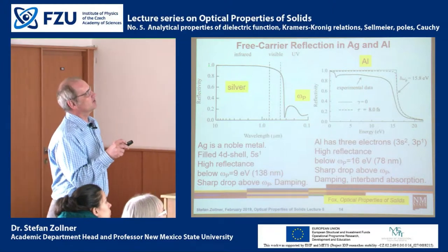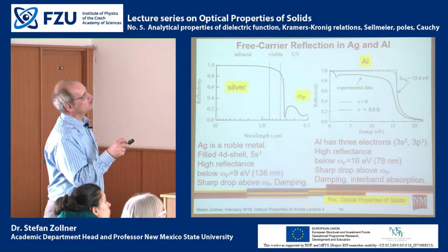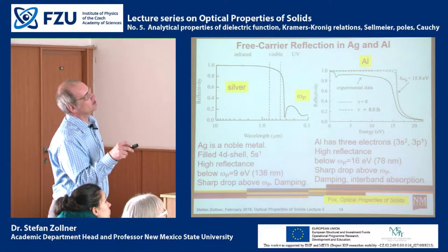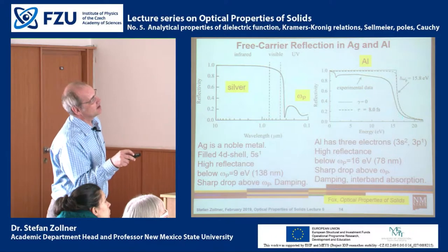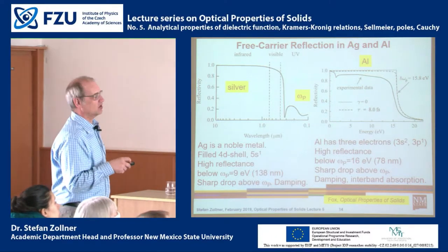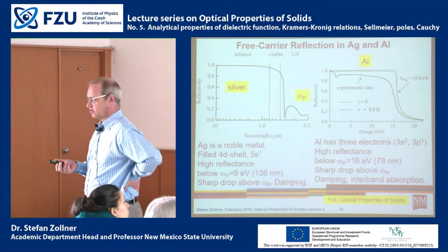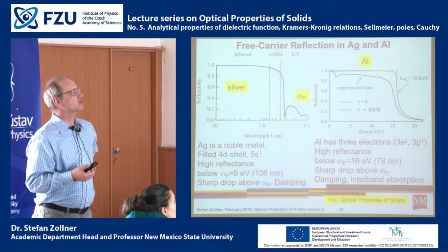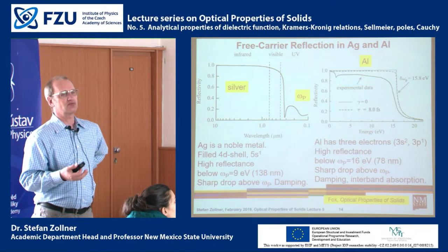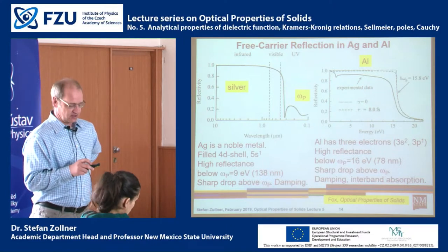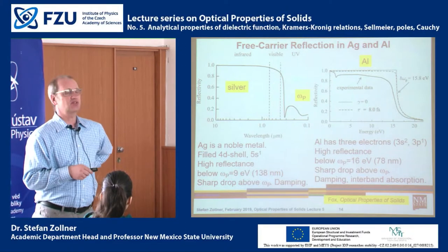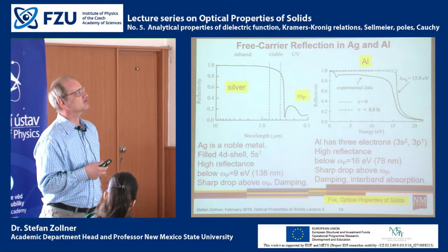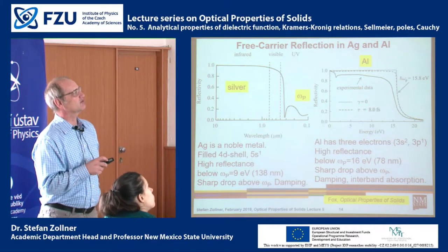Let's look at experimental data. The reflectivity of silver is one, then it drops. For aluminum the reflectivity is not quite one, and then it drops at the plasma frequency. The Drude model explains why the reflectivity of a metal is very high, and that's why we use bare metal mirrors to get high reflection coefficients. In reality, we use dielectric coatings to protect metals and enhance reflectivity, but even bare metal gives very high reflection.